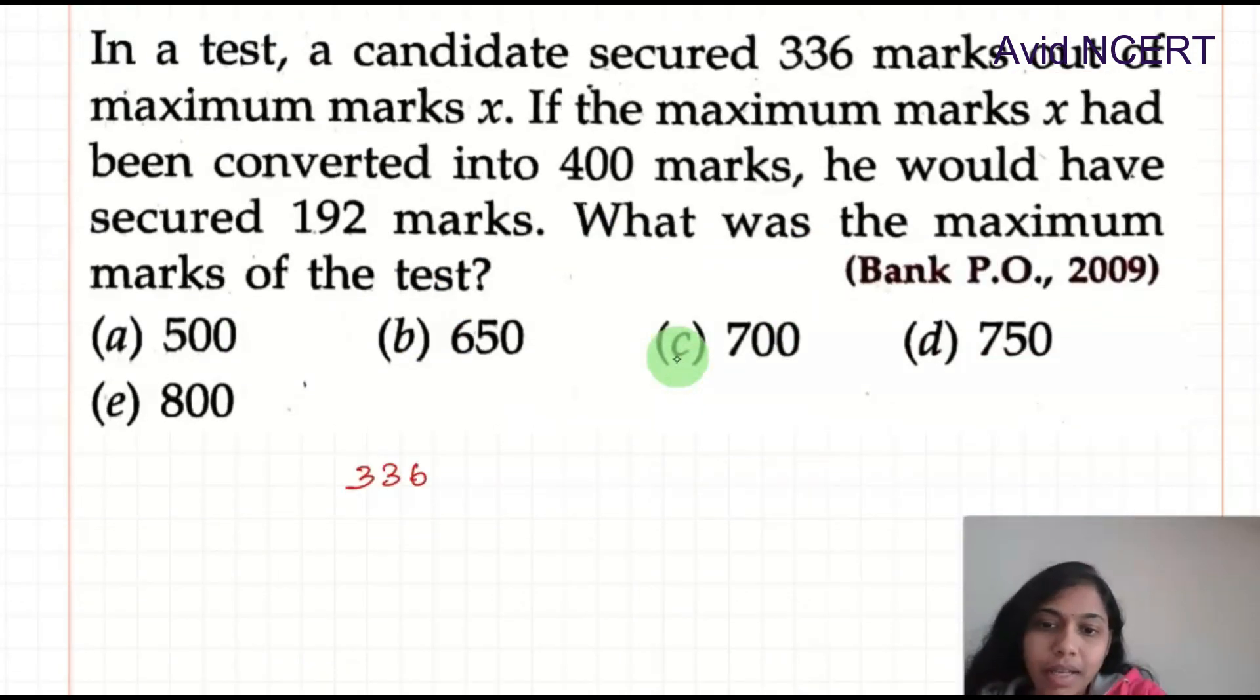So 336 marks out of x marks. When it is converted into 400 marks, this x is converted into 400, he got 192.